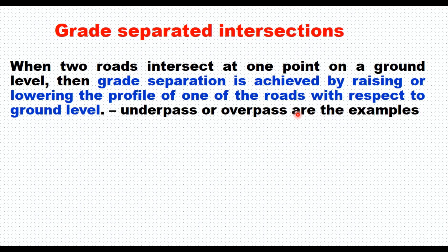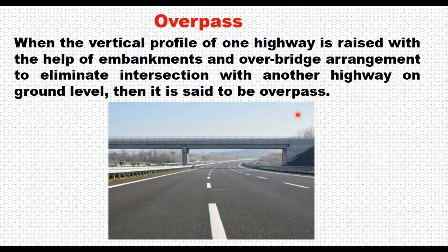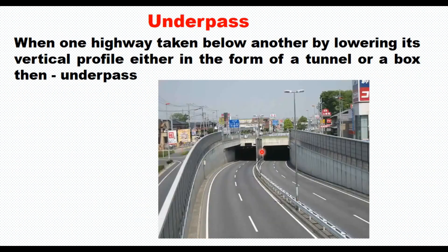Grade separation is achieved by raising or lowering the profile of one of the roads with respect to ground level. Underpass and overpass are examples of grade separation. When the vertical profile of one highway is raised with respect to another road using a bridge to eliminate intersection, it is called an overpass. When one highway is taken below another road by lowering its vertical profile, either as a tunnel or a box structure, it is called an underpass.